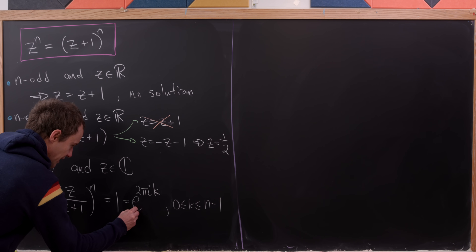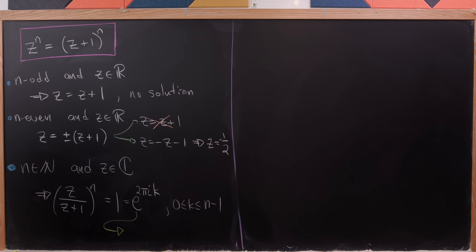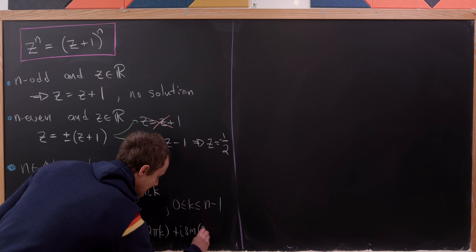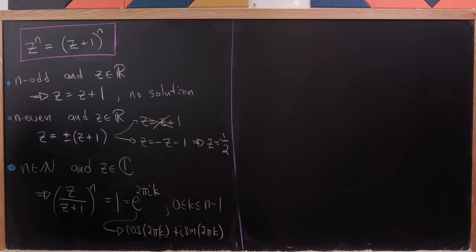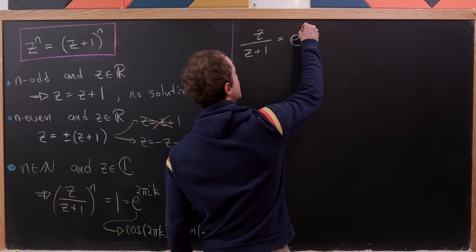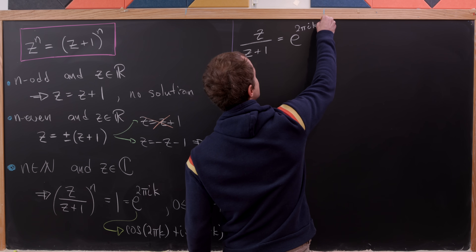This is in fact equal to 1 because we can write e to the 2πik as cosine of 2πk plus i times sine of 2πk. Since cosine and sine are 2π-periodic, cosine of 2πk equals 1 and sine of 2πk equals 0, so this is 1 plus 0 times i. This is Euler's famous formula for the complex exponential. Taking the nth root of both sides gives z over z plus 1 equals e to the 2πik over n.